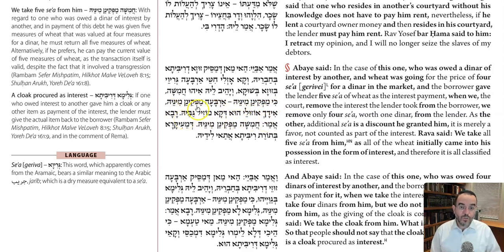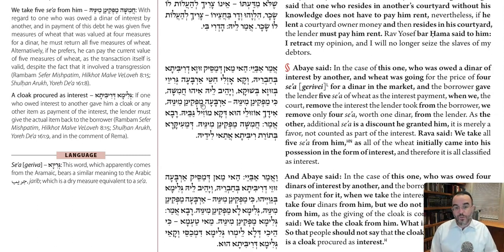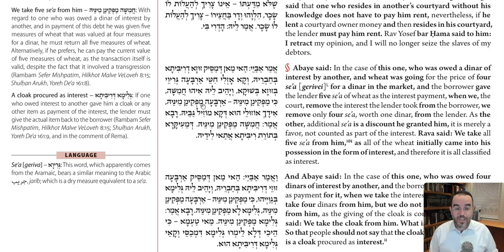We take away only four seah from the lender, because the fifth one was an extra gift — he gave it at a special discount price, but that was not the market price. Since the payment of the ribit was only one zuz, and one zuz equals four seah, there was a 25 percent added payment, but that part was not ribit. So we let him keep one seah and we take away four seah — according to Abaye.